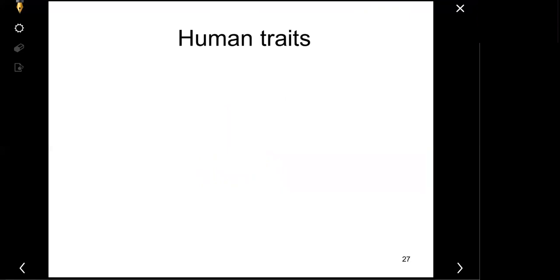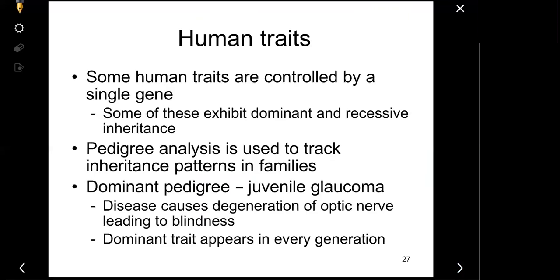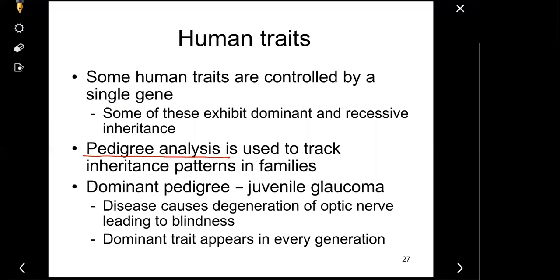Moving on: by knowing how genes work, we can understand how human traits are inherited. Some human traits are controlled by a single gene. For those traits controlled by just one gene, we can easily track it using something called a pedigree, and there is an analysis called pedigree analysis. For example, I'm going to show you a dominant pedigree of glaucoma.